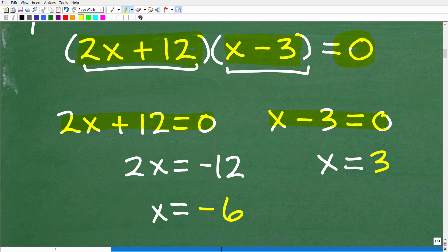All right, so you can see the basic algebra here. 2x plus 12 is equal to zero. I'm going to move that 12 to the side. I get 2x is equal to negative 12. Divide both sides equation by 2. I get x is equal to negative 6. And then here, I just simply have to move that 3 to the other side. Again, x is equal to 3.